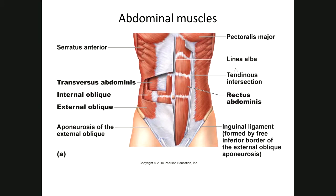These are your abdominal muscles. The exterior part has been dissected away on one side so you can look inside. On the very external part you have your external oblique, also known as external abdominal oblique, going obliquely in one direction. Internal oblique is just inside that, going the other way. Transversus abdominis is the most interior and goes horizontally.